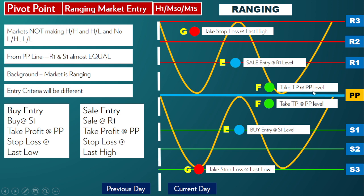So in both situations the criteria is almost similar — your take profit will be the PP level whether you are taking a buy trade or a sell trade. You can determine the stop loss level according to your situation and analysis. This is how you take a pivot point ranging market entry when there is no particular trend and the market is ranging — this is how you can trade while applying the pivot point indicator.